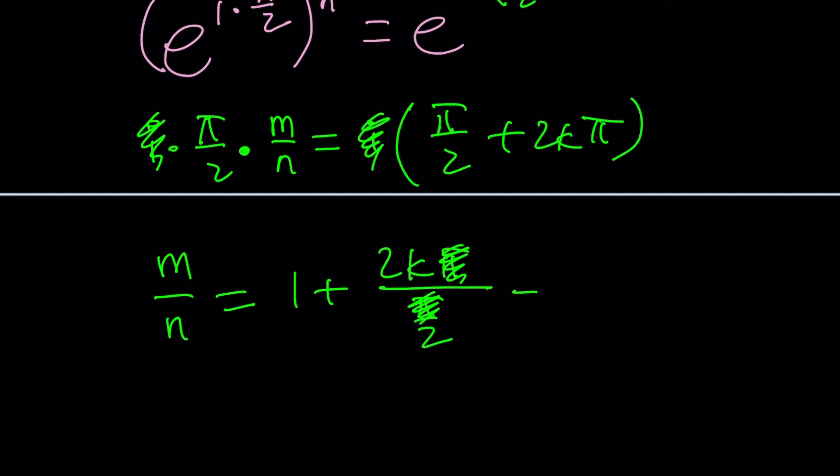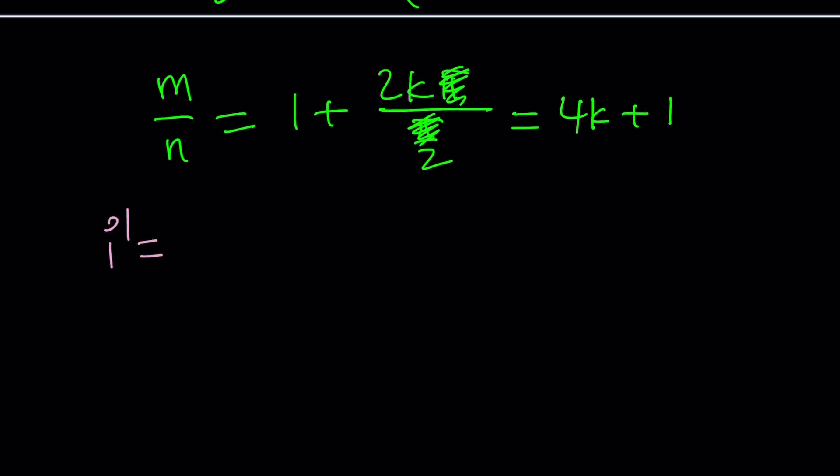That should give you m over n, and that will be 1 plus 2k pi over pi over 2, and then pi will also cancel out. That's going to give you 4k plus 1, super duper nice. So m over n is 4k plus 1.